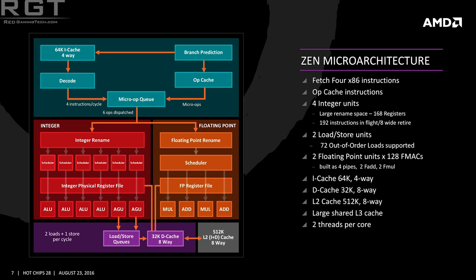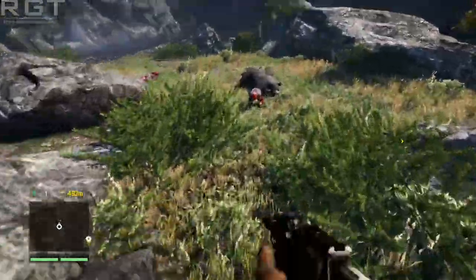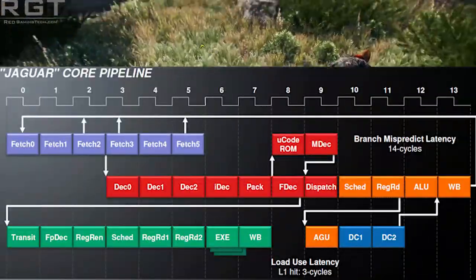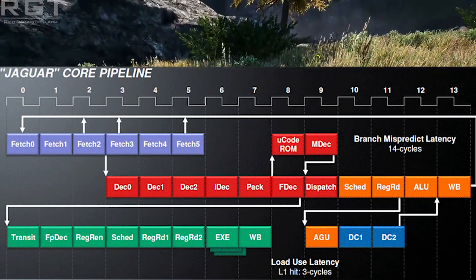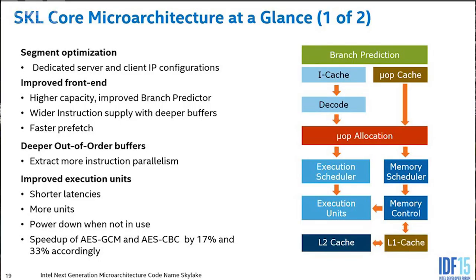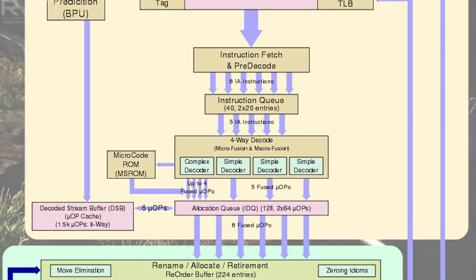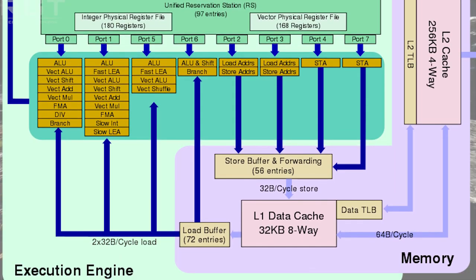Modern processors typically have many more stages in the pipeline. For example, the Jaguar processor, found in both the Xbox One and the PS4, has about a dozen stages in its respective pipeline, whereas CPUs from Intel or AMD's latest and greatest have about 20-ish stages in their pipeline — I say 20-ish because it's sometimes a little more. But these stages are subdivided from the basic stages above, and therefore the previous five can serve as a basic solid foundation for your knowledge.